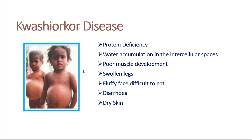What are the symptoms of Kwashiorkor? Water accumulation in the intercellular spaces — between cells — leads to swelling of the body. Poor muscle development, swollen legs, fluffy face, and difficulty eating. In this image you can easily observe the fluffy face and swollen abdomen. Diarrhea — frequently loose motions — and dry skin are also symptoms. These are all caused due to protein deficiency.